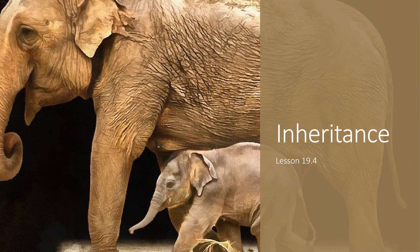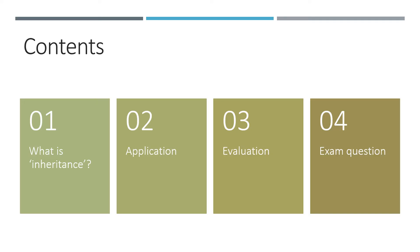Welcome back. In lesson 19.4, we'll look at a final feature of object-oriented programming, and that is a very useful thing called inheritance. In this lesson, we'll learn what inheritance means, how it can be applied to OOP programs, evaluate its advantages and look at our friend the exam question that we've already been looking at.